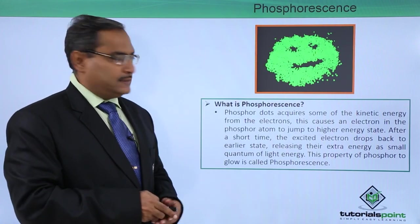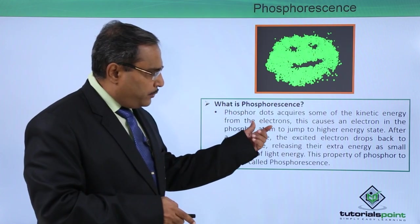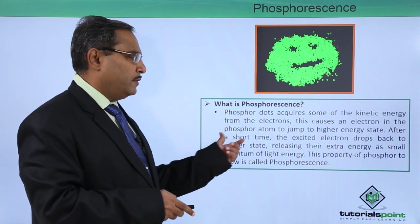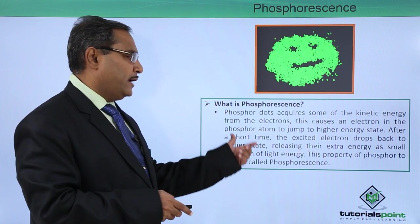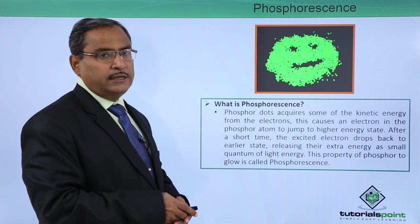What is phosphorescence? Phosphorescence acquires kinetic energy from electrons, and this causes an electron in the phosphor atom to jump to a higher energy state.